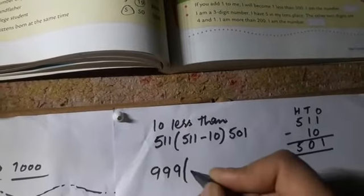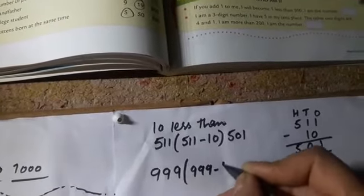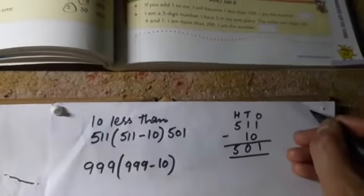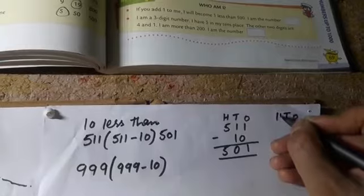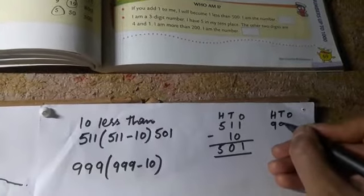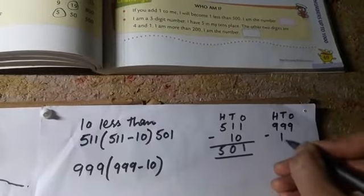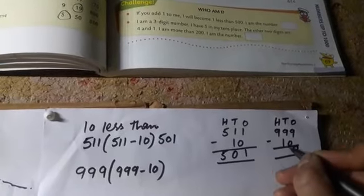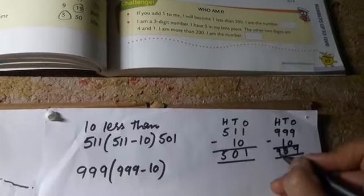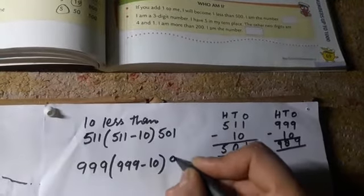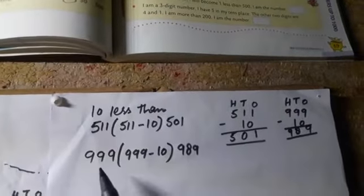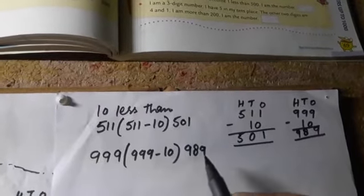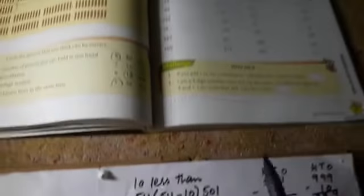फिर है triple 9 — 999. यह भी 10 less than के नीचे आता है, इसका मतलब इसे भी हमें 10 less करना है। 1's, 10's, 100's — 999 minus 10: 9 minus 0 = 9, 9 minus 1 = 8, and this 9. तो क्या बना — 989. जब हमने 999 को 10 less किये तो 989 बना।